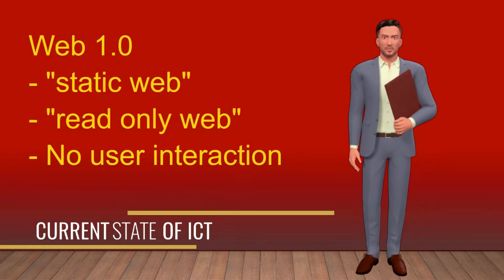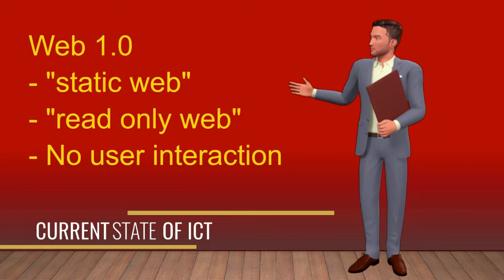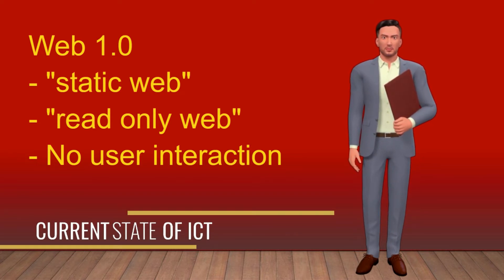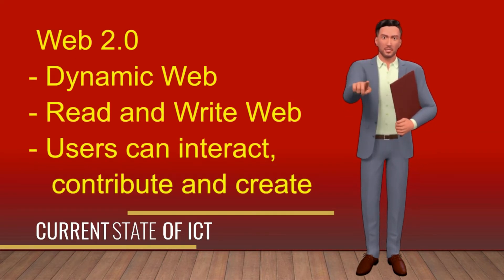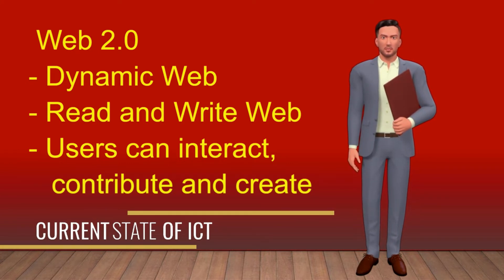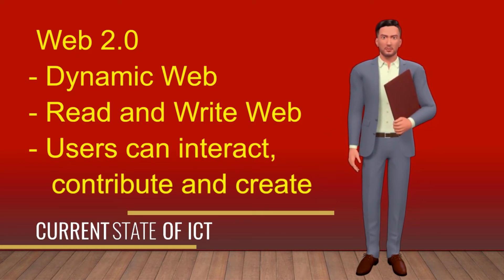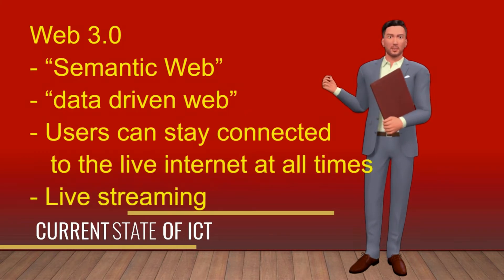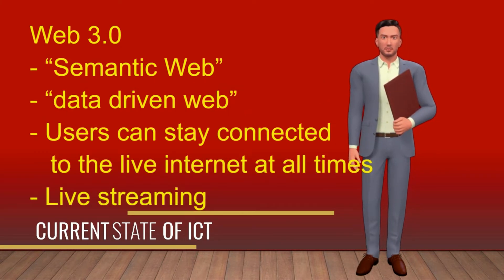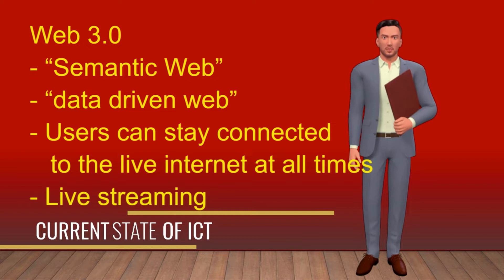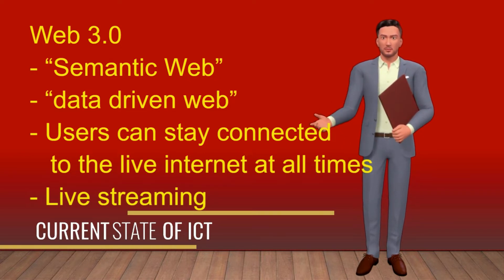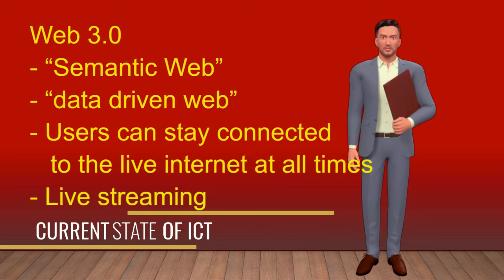Web 1.0 is known as static web or read-only web, since there was no user interaction. Web 2.0 is known as dynamic web or read-and-write web — users can now interact, contribute, and create their own internet space and content, resulting in the explosion of information available for everyone on the net. Web 3.0 is also known as the semantic web or data-driven web. All available information is based on real-time events, and users can stay connected to the live internet at all times. An example is live streaming on Facebook and YouTube.